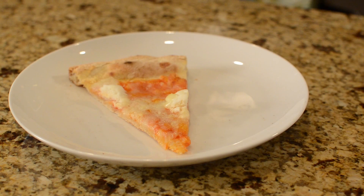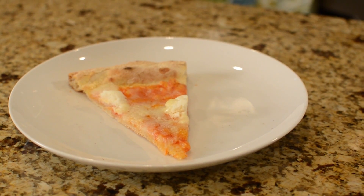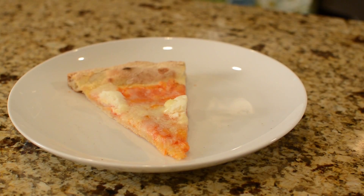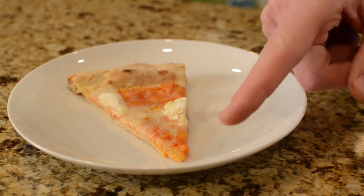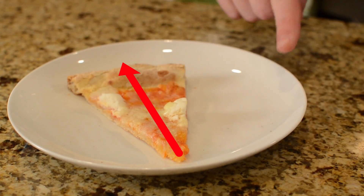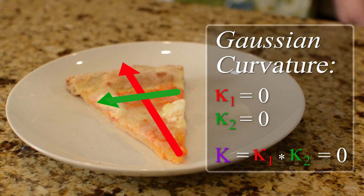A flat sheet and a round surface have different Gaussian curvature. Gauss would look at a slice of pizza and say that it has no curvature in this direction or in this one — zero Gaussian curvature.